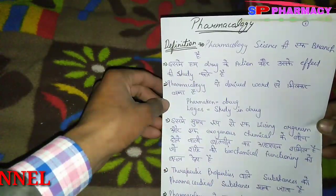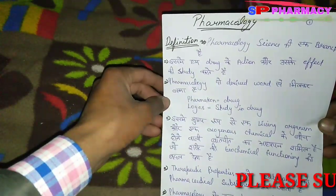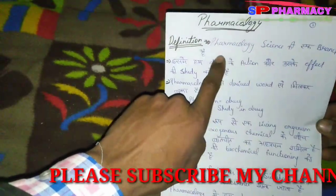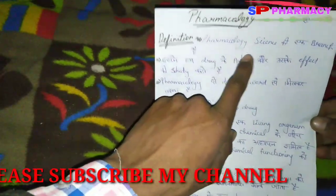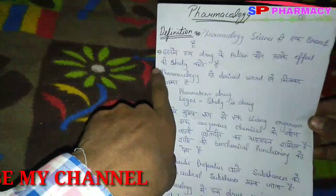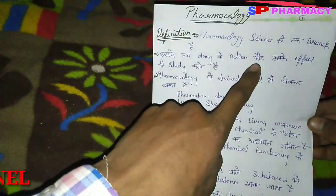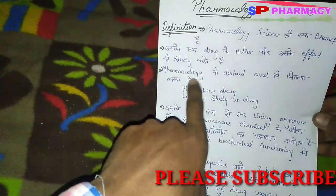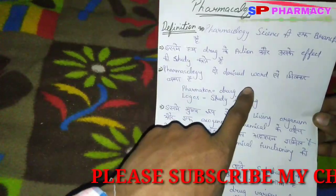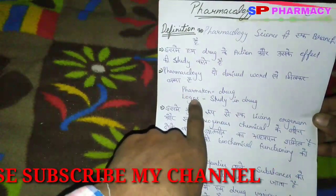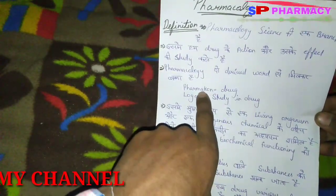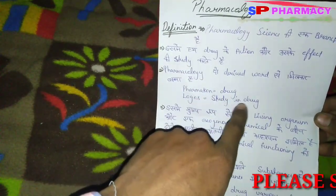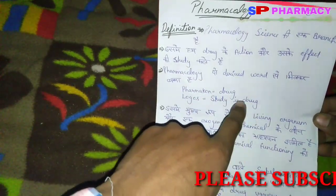What is the definition of pharmacology? Pharmacology is a branch of science in which we study drug action and effect. Pharmacology is made of two words: Pharmacon and Logos. Pharmacon means drug, and Logos means study. So pharmacology means the study of drugs.